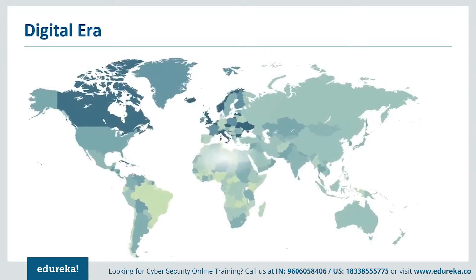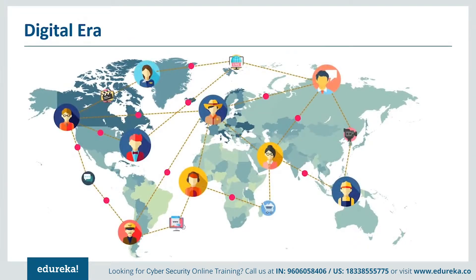The internet today informs, entertains and connects us. It's the backbone of the global economy. Our devices, which are connected through the internet and other networks, open up a world of possibilities in front of us. We can access information we need without having to keep it on our devices permanently, and we can easily communicate with others on the other side of the world. These connected devices form the network that helps us run our lives, but these connections also leave our devices vulnerable to damage and our information vulnerable to theft.